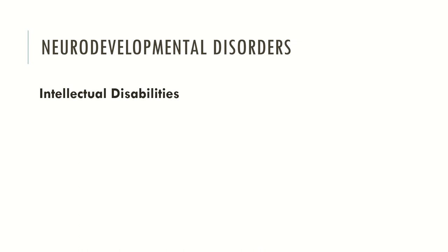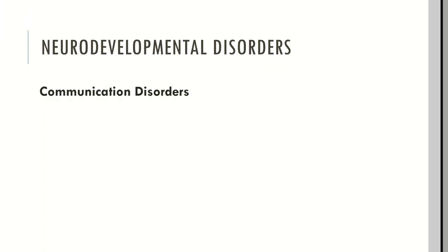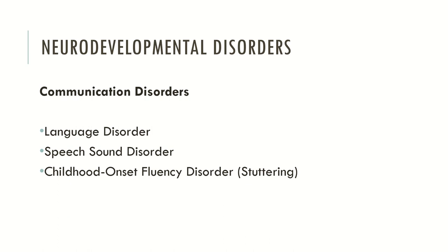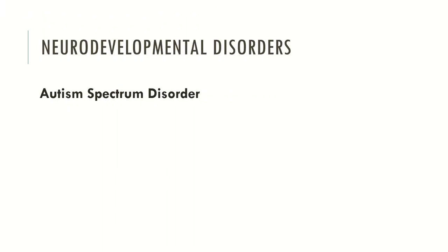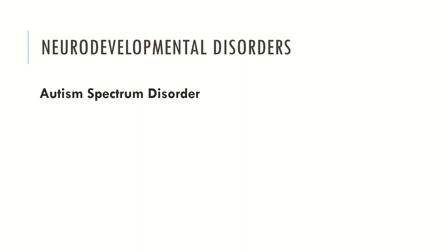The first category is intellectual disabilities, which encompasses intellectual disability, global developmental delay, and unspecified intellectual disability. We have communication disorders: language disorder, speech sound disorder, childhood onset fluency disorder, social communication disorder, and unspecified communication disorder. Another category is autism spectrum disorder, which is a new category in the DSM-5. The category of Asperger disorder was merged with autism disorder to develop autism spectrum disorder, and individuals may be diagnosed from mild to severe.